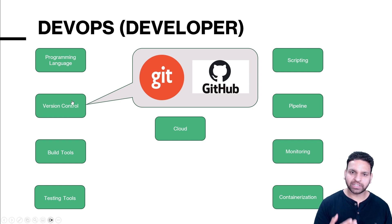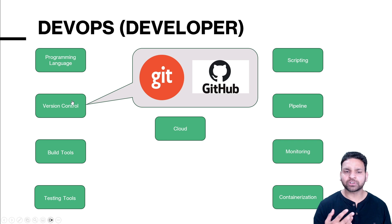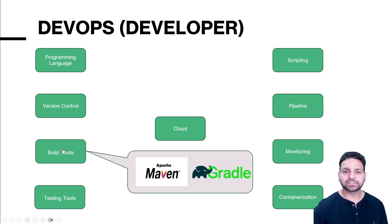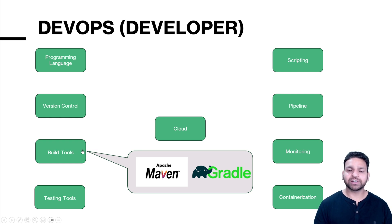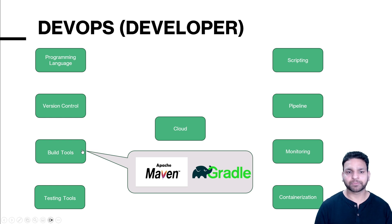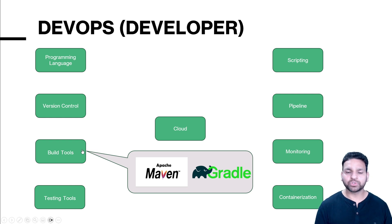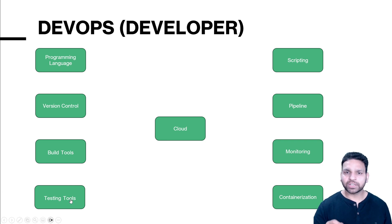The next step is continuous integration and continuous deployment — you need to build the code you've written. There are different build tools like Maven and Gradle, and it depends on the programming language which tools you need to use. These tools work differently when installed locally versus in a virtual machine versus used as a PaaS service. The DevOps developer should know all these tools and how to build using a cloud pipeline or a pipeline running on a server.